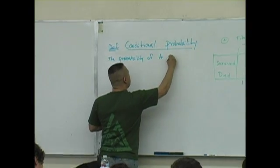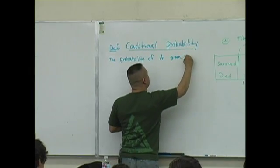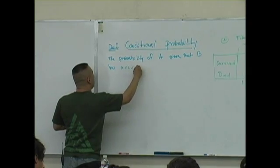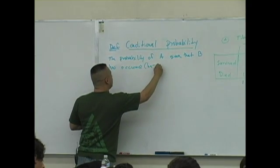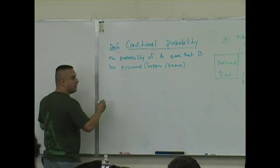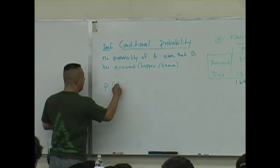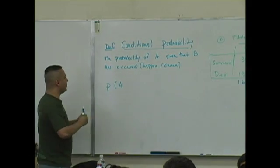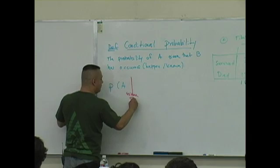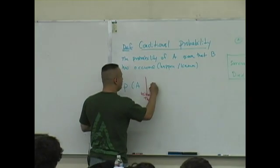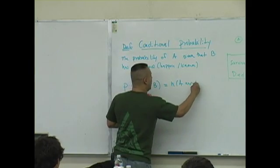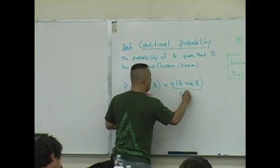And here it is: this is the probability of an event A given that B has occurred, or has happened, or is known. And this is what the definition looks like: P of A—this line is not division, it's a vertical line and represents the phrase given that B—that equals n of A and B over n of B.